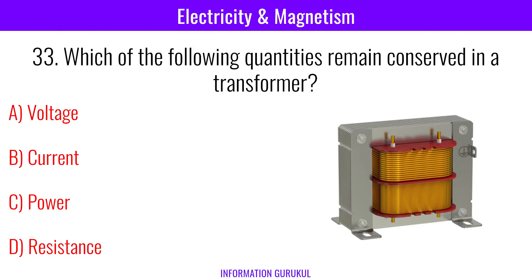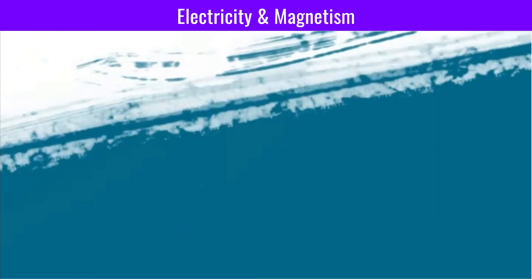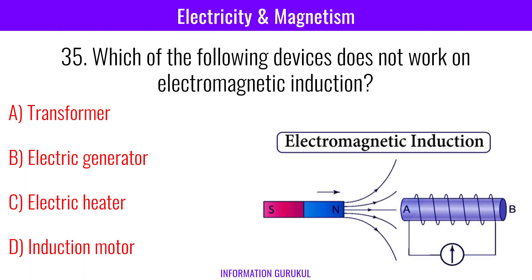Which of the following quantities remains conserved in a transformer? Power. Which component is used to store energy in the form of a magnetic field? Inductor. Which of the following devices does not work on electromagnetic induction? Electric heater.